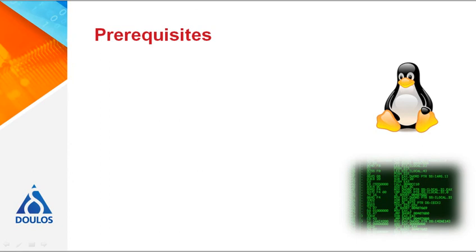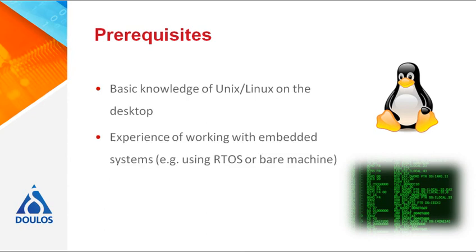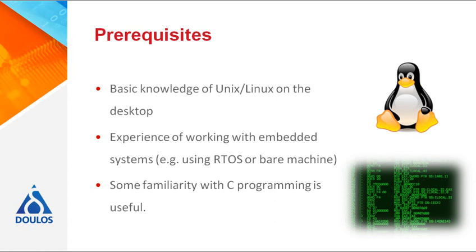There is some prerequisite knowledge which we feel is important to have before taking this course in order to get the most out of it. Some experience with working with Unix or Linux-based host or desktop systems is definitely really useful, as it means you can focus on the embedded side of things without getting too bogged down in the details of the administrative tasks. We do help bring these skills on as part of the practical exercises. Any experience you have of working with embedded systems is also going to be an advantage, as you'll be familiar with working with a remote target. In order to understand some of the structures and frameworks used by parts of an embedded Linux system, some knowledge of C programming is a must. If you have any doubts about your experience levels, please talk to your local DoLoss representative or take a look at the DoLoss website.